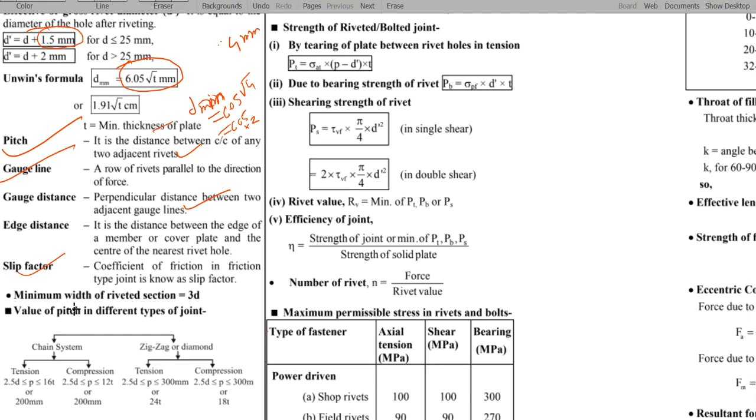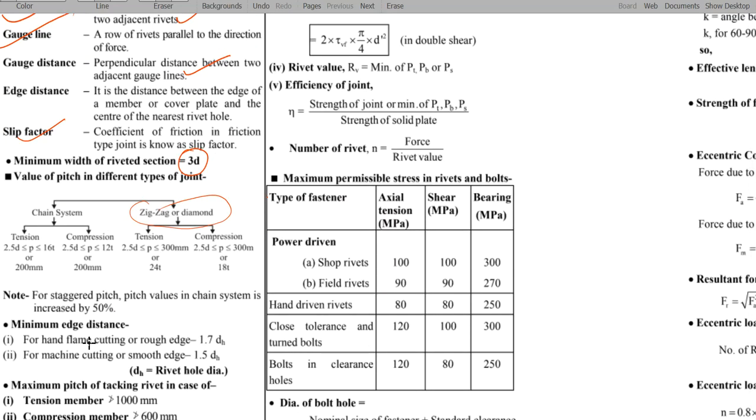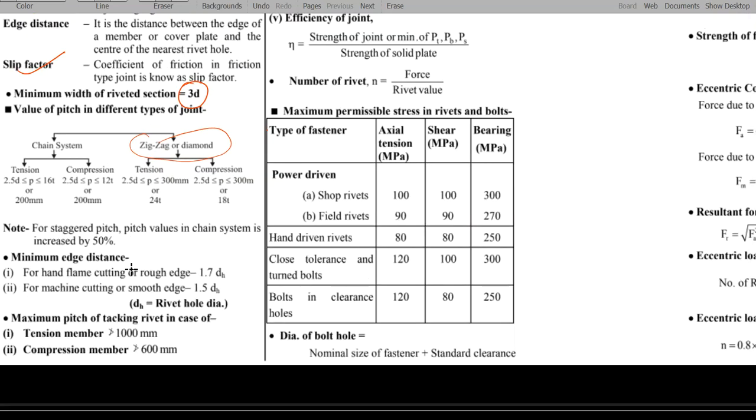Next, what is the minimum width of the rivet section? It is 3 into d. Then, we have another important minimum edge distance. For hand flame cutting or rough, it is 1.7 into dH or for machine cutting it is 1.5 into dH.